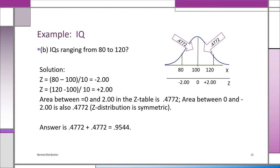Part B is very much the same but the two non-overlapping areas on either side of the mean are a little larger. At an IQ of 80, Z = −2; at an IQ of 120, Z = +2. The area from 0 to 2 is 0.4772. Since the distribution is symmetric, we have 0.4772 on each side. Adding them: 0.9544, so 95.44% of the population will have IQs between 80 and 120.